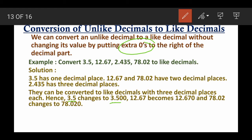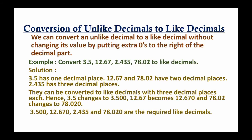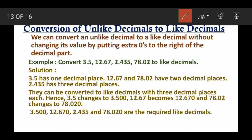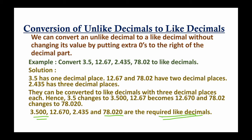Continuing, 12.67 becomes 12.670, and 78.02 becomes 78.020. The number 2.435 already has three decimal places so no change is needed. Now 3.500, 12.670, 2.435, and 78.020 all have three decimal places, so we can say that all these are like decimals.